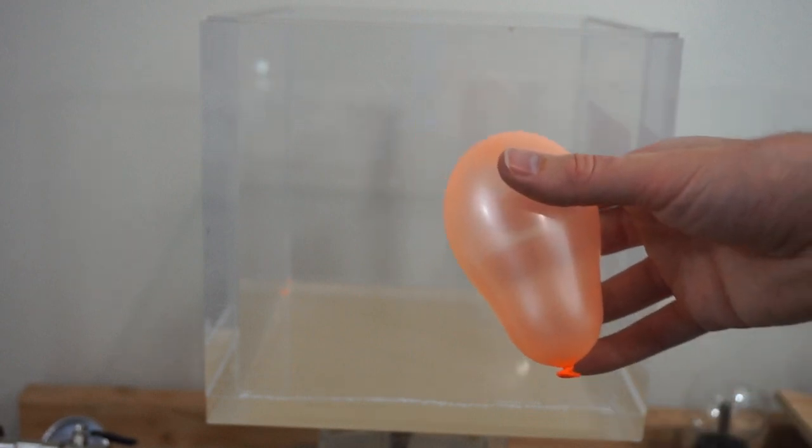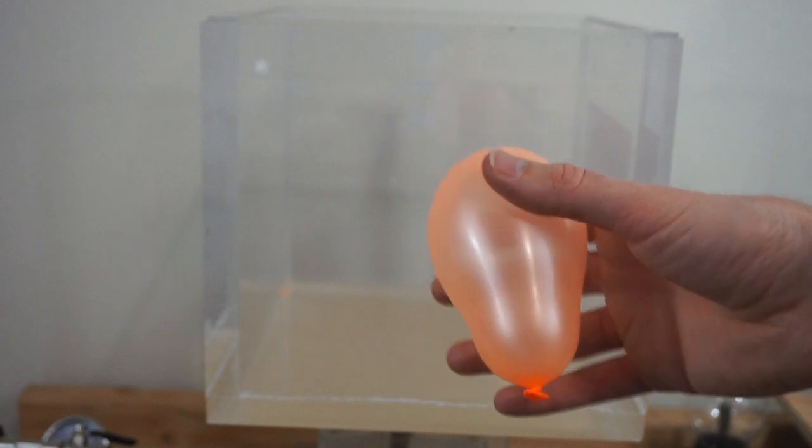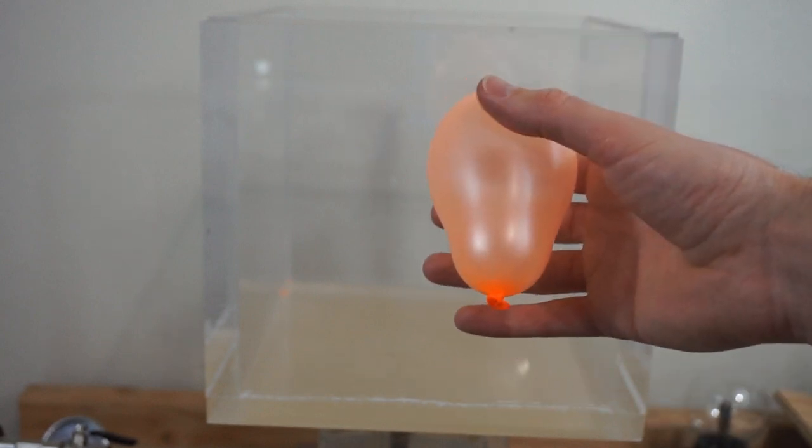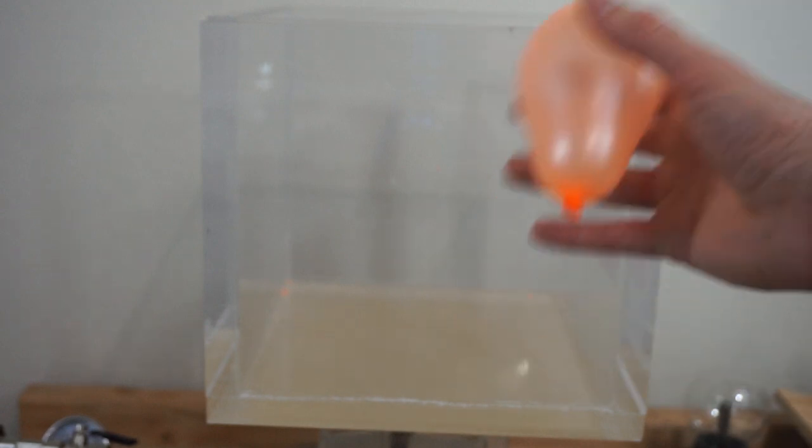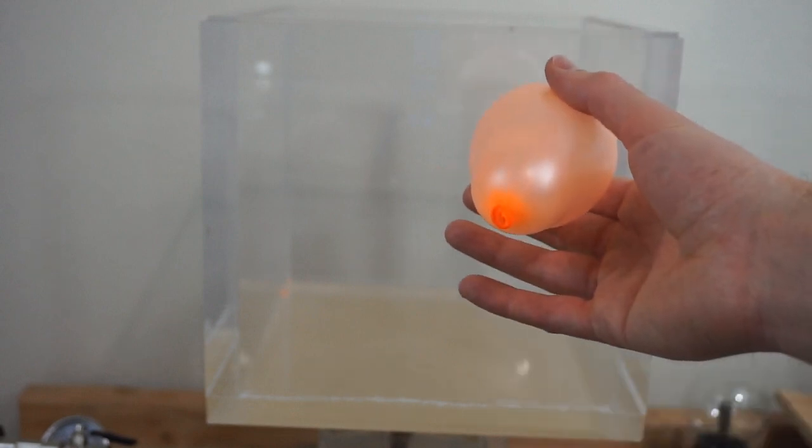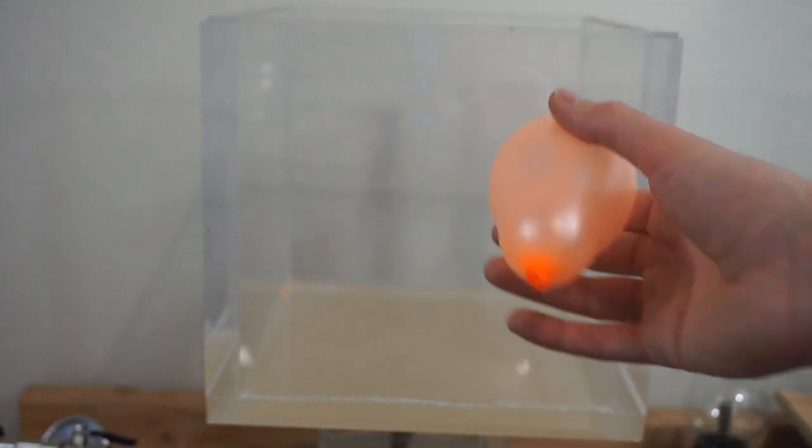And so I've actually seen proposals to make airships out of a vacuum. So if you can build an airship that has rigid enough walls that it won't collapse on itself due to the atmospheric pressure, it would actually float very well. Better than helium or hydrogen or anything.